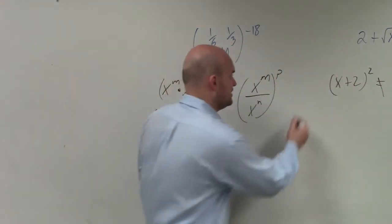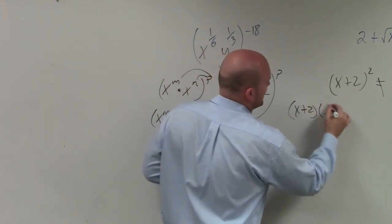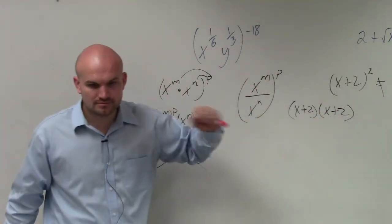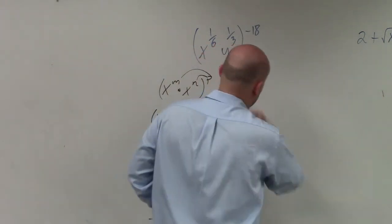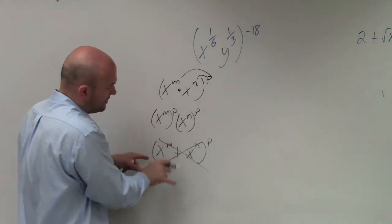x plus 2 squared equals x plus 2 times x plus 2. And you'd have to use FOIL. Oh, okay. So just making sure that you guys understand that that does not work for this.